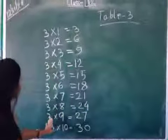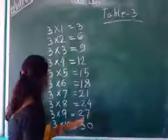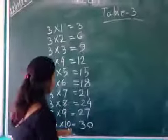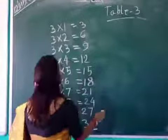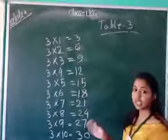3 nines are 27, 3 tens are 30. Once again, now let's start again.